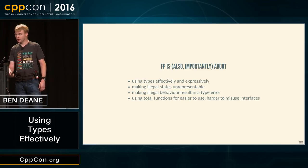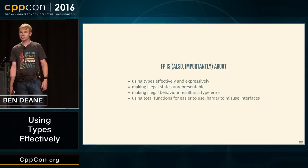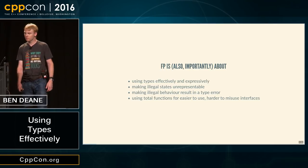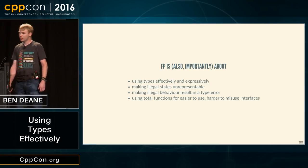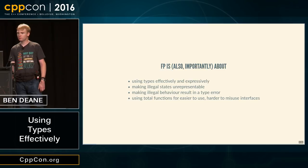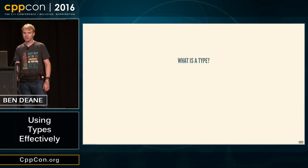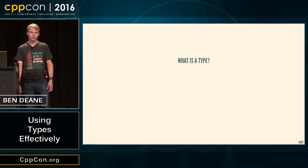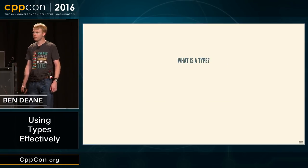A key thing is making illegal states unrepresentable, and making illegal behavior be a type error. That was kind of the evolution of this talk. C++ is definitely moving in this direction, in my opinion. So, the first question is: what is a type?